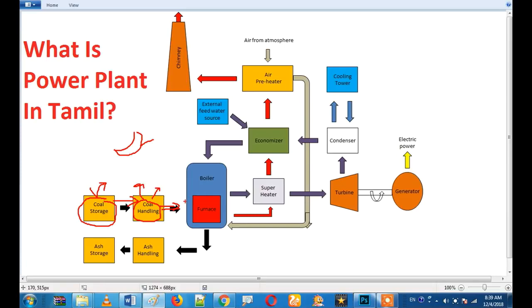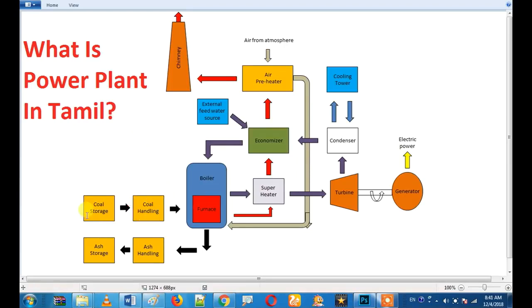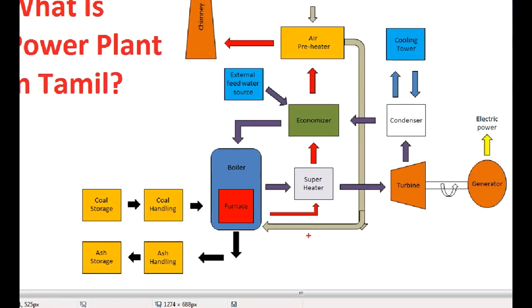The furnace area is in between, so you can control the whole venting. You can control the coal and use it directly. You can return to the coal storage area, control the coal storage, and manage the furnace and fuel feeding.